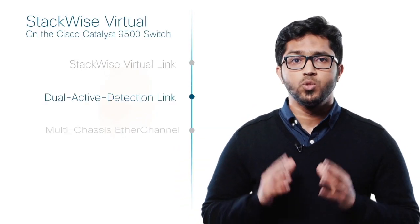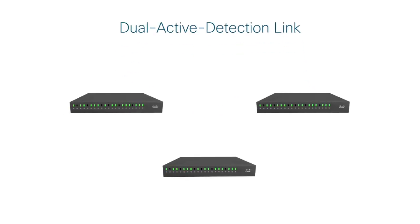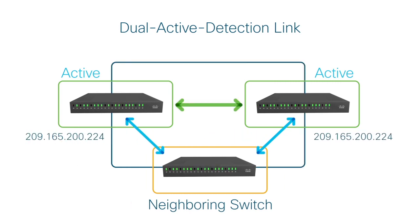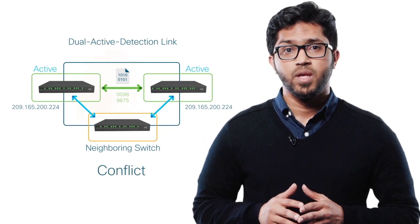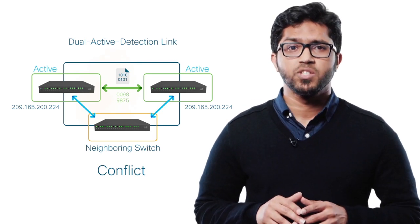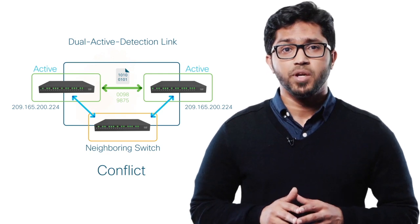The next actor is the dual active detection link. What if both switches in your StackWise Virtual system become active and operational at the same time? Both switches would use the same IP addresses, the same SSH keys, and the same STP bridge IDs. In other words, you're looking at a dual active condition in your network — a conflict. This condition means only one thing: adverse effects on your network stability and possible disruption to network communication.